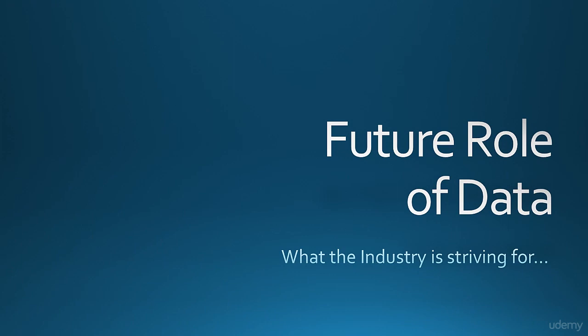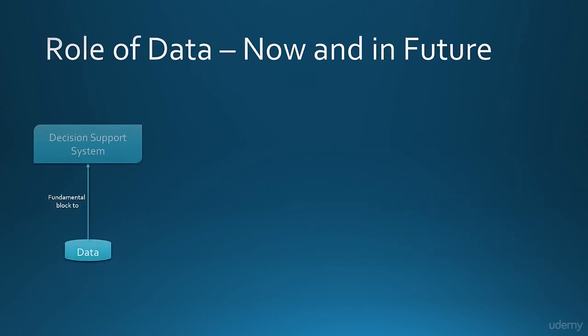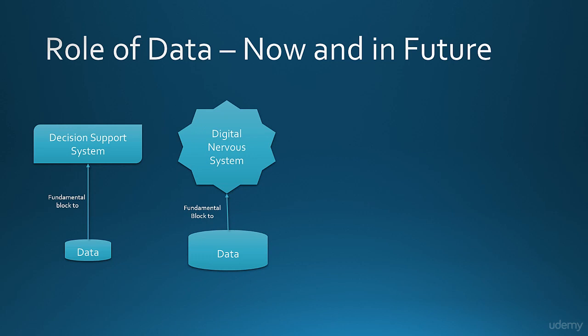Welcome to a new lesson. In this lesson we would sneak and peek into the future of data and its importance to society and business. In the previous lesson we saw how data is functioning as a decision support system. Soon its role is going to graduate as a fundamental basis of a digital nervous system. The term digital nervous system was popularized by Bill Gates in his book Business at the Speed of Thought, released in 1999. It wasn't a term coined by him but he certainly popularized this idea the most.